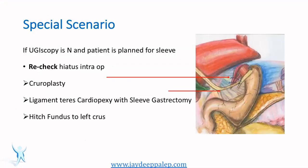This is an interesting slide — especially if you're doing a sleeve and are not too sure whether the patient will land up with reflux. You can do a cruroplasty using the ligamentum teres and perform a cardiopexy with the sleeve, rotating it like a band across the GE junction. This helps keep the sleeve down in the abdomen and prevents it from migrating up. Cruroplasty is mandatory in these cases — this technique is something to always keep in the back of your mind.